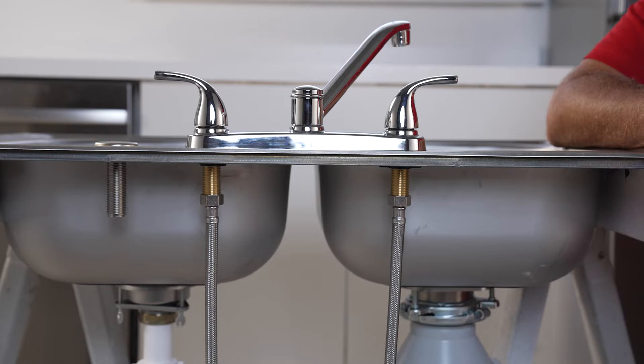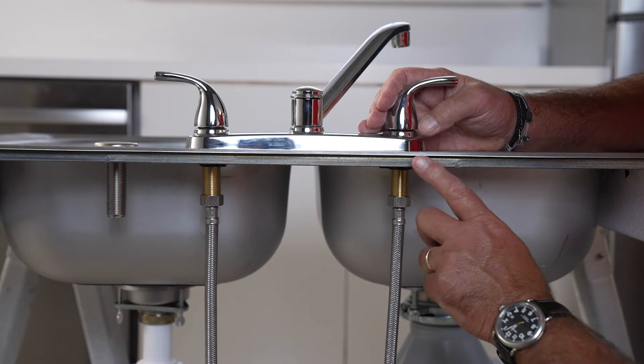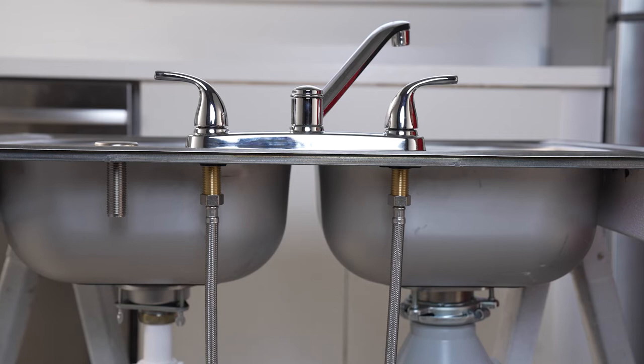Now this older faucet you'll see has two water lines here, and in order to remove the faucet first, these water lines need to come out. It's going to be difficult to try and get a wrench up in here because it's such a tight space.